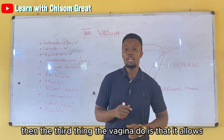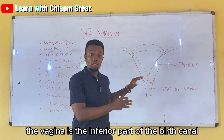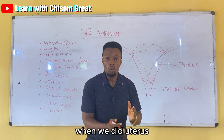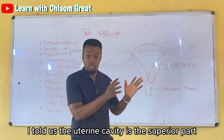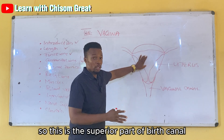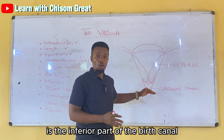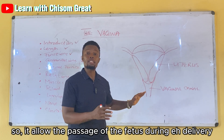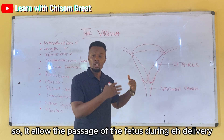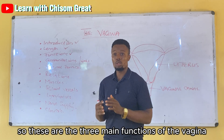The third function is that the vagina is the inferior part of the birth canal. When we covered the uterus, I mentioned that the uterine cavity is the superior part of the birth canal. The vaginal canal is the inferior part, and it allows the passage of the fetus during delivery. These are the three main functions of the vagina.